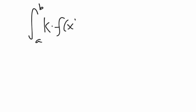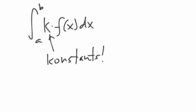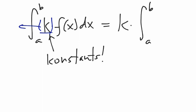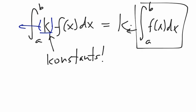The last property is the constant multiplier property. If we have the integral from a to b of k times f of x dx, where k is a constant, you can pull the constant out — just like with derivatives, the integral is a semi-permeable membrane for constants. We rewrite this as k times the integral from a to b of f of x dx, and then multiply by the constant at the end.